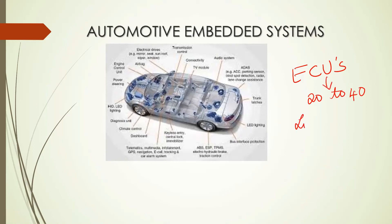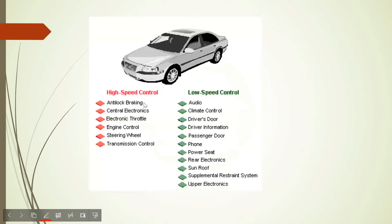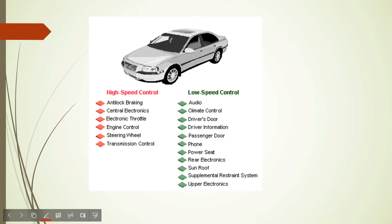If it is a very luxury car, you may have around 70 to 100 ECUs. The number of ECUs depends on the luxury and safety of your car. Here are some examples: braking system, central electronics, throttle, engine, wheel, and transmission control are all high-speed ECUs. Your audio, climate control, driver's door, passenger door, phone, power seat, rail electronics, and sunroof are all low-speed ECUs.